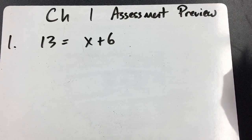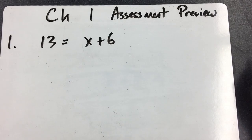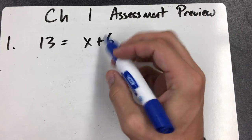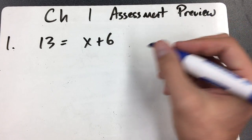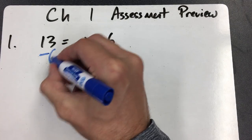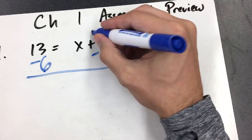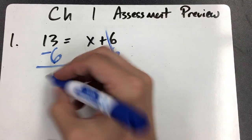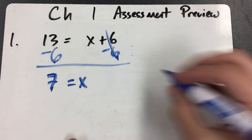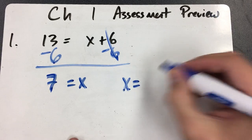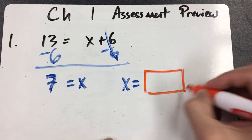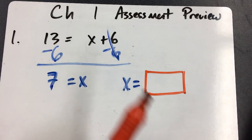Number one says 13 equals x plus 6, and you're going to have to give two answers. You need to find the variable — you want to isolate the variable. So you're going to do the inverse of adding 6, which is subtracting 6. Whatever you do on one side, you do the same thing on the other, and you'll get x equals 7. There will be a box on the computer that says x equals, and that's where you'll put your answer of 7.